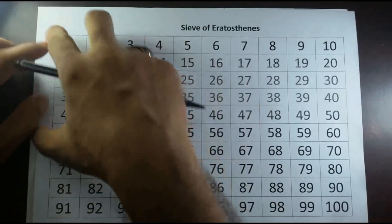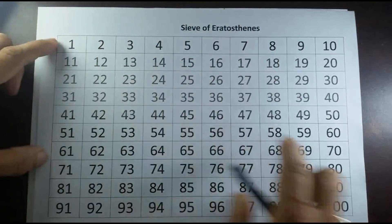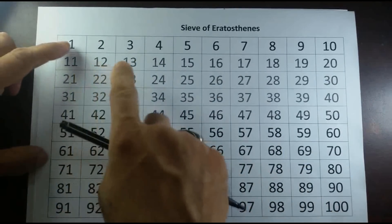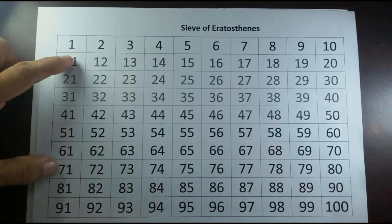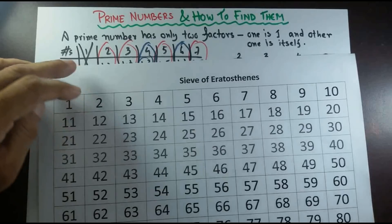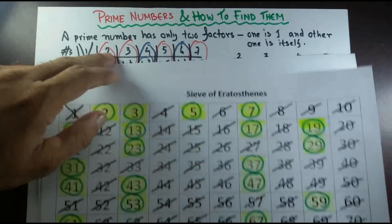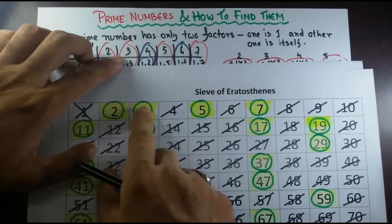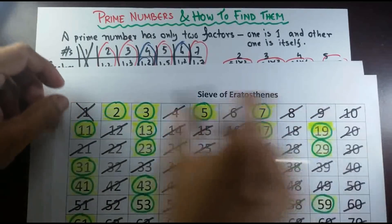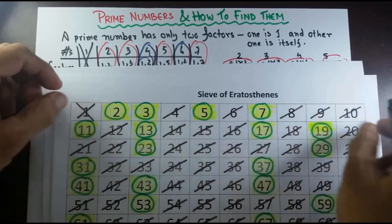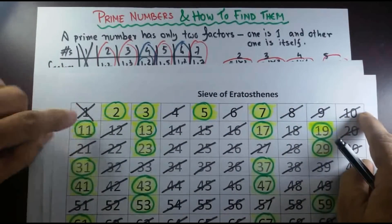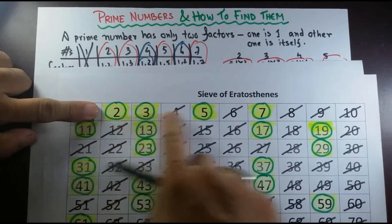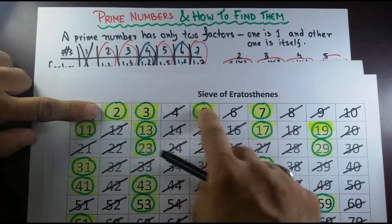He wrote down all the numbers — such as from 1 to 100 as I've done here. Then what he did was circle out all the prime numbers. I did this for you: 2, 3, 5, 7 — the first four prime numbers from 1 to 10. 1 is not qualified as a prime number, so cancel it out.